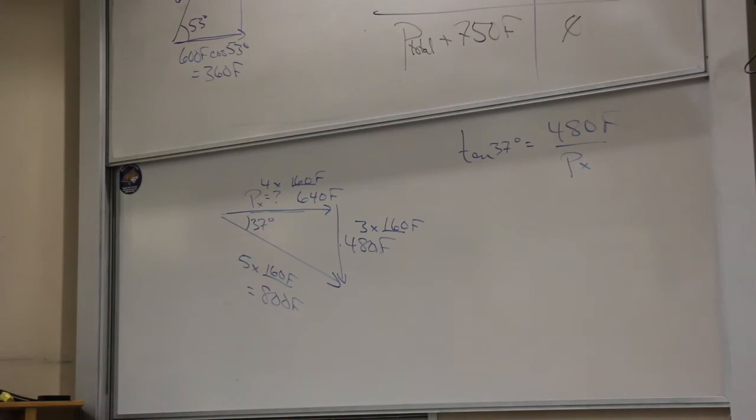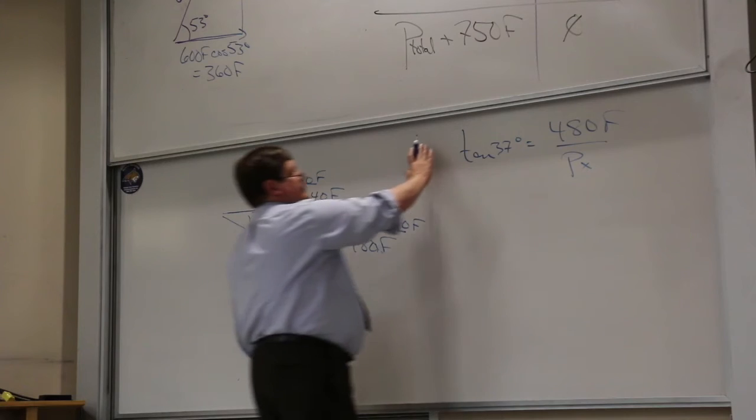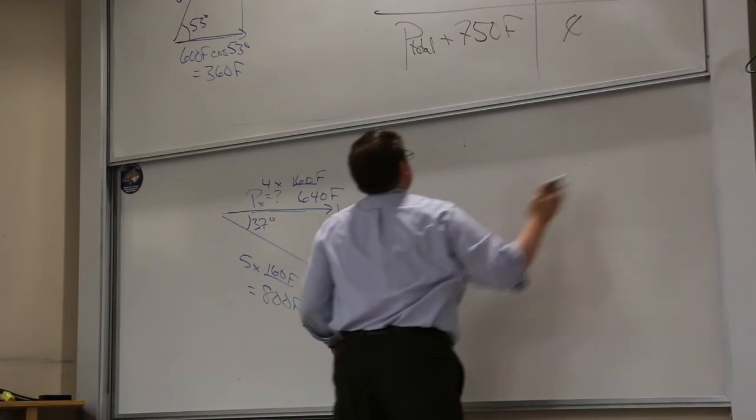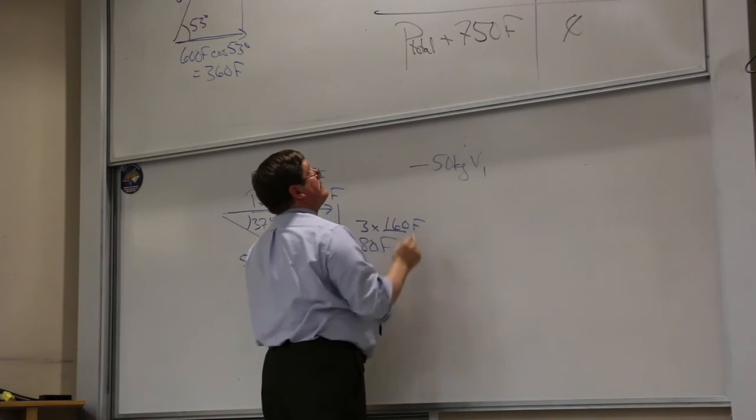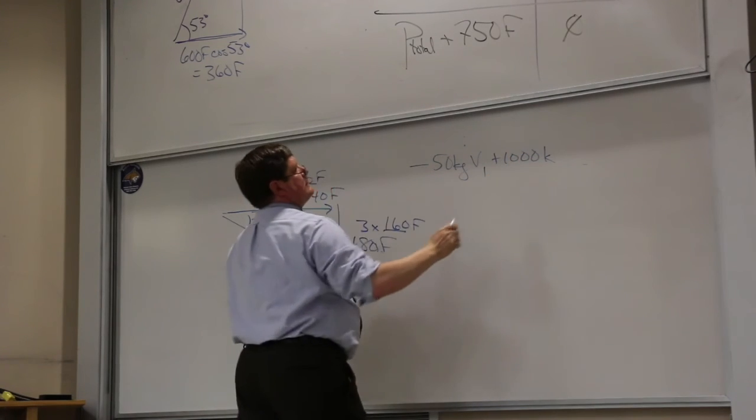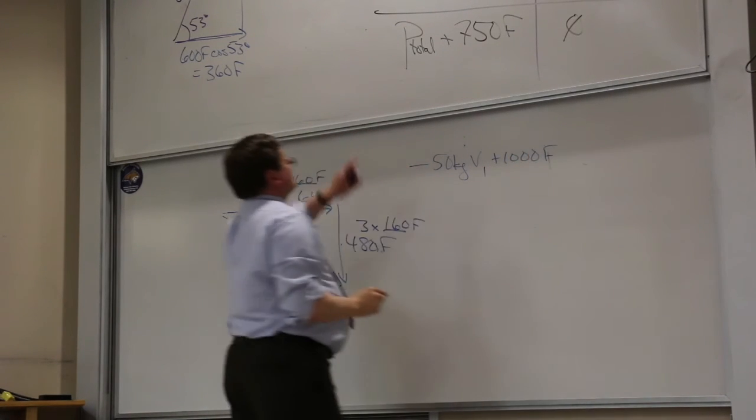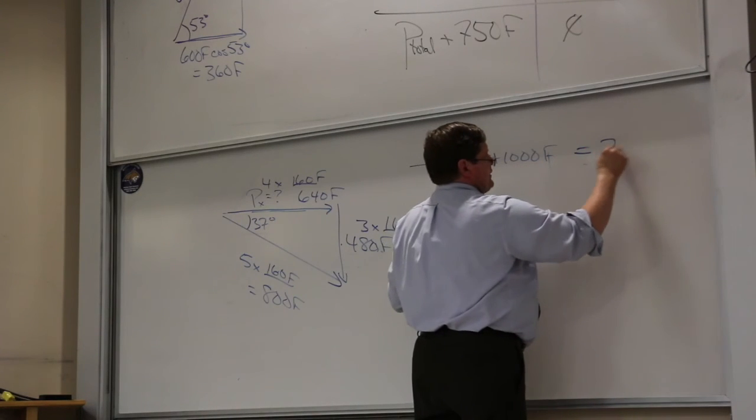Now, the last part of this problem asks us, how fast is fragment 1 going? We've already used the Y part and added it up. Let's use the X part. If I add up that X part, I find that minus 50 kilograms times V1 plus 1,000 - 360 plus 640, think of it as money, you've got a grand - that's got to add up to 750.